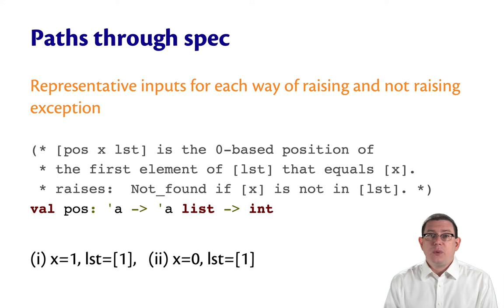Remember, by stating a raises clause here, the specifier is making a promise about how this function is supposed to behave. It must raise an exception. It's part of the post condition if x is not in the list.